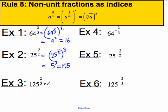125 to the 2 3rd must be 125 to the 1 3rd, all to the power of 2. 125 to the 3rd means the cube root of 125, which is 5, so this must equal 5 squared, or 25.